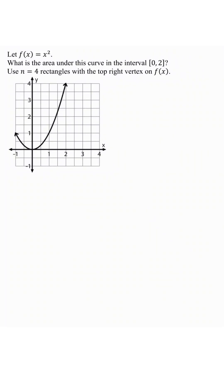Let f(x) equals x squared. What is the area under this curve in the interval 0 to 2? Use n equals 4 rectangles with the top right vertex on f(x).